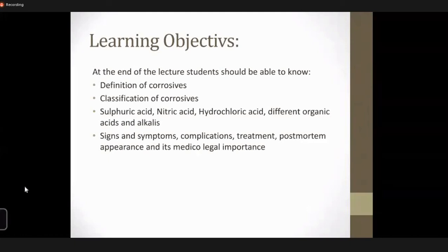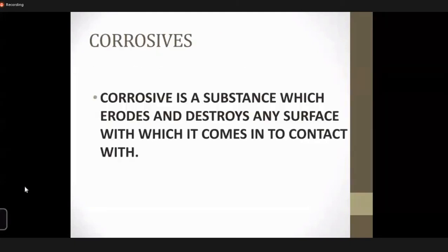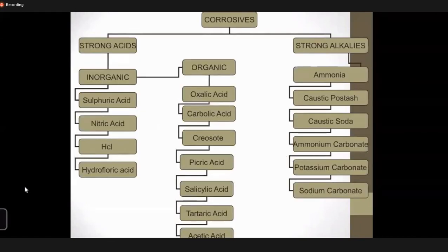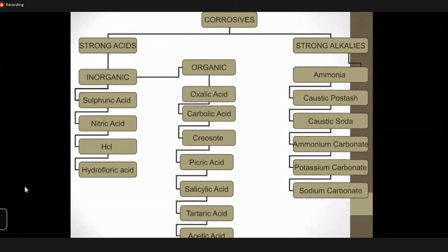How can they be classified? They can be classified as strong acids and strong alkalis, further subclassified as inorganic and organic. The inorganic are also known as the mineral acids, mainly used as reagents. Examples are sulfuric acid, nitric acid, and hydrochloric acid. The organic acids are basically carbon compounds and they have better absorption. Examples are oxalic acid, carbolic acid, and salicylic acid.